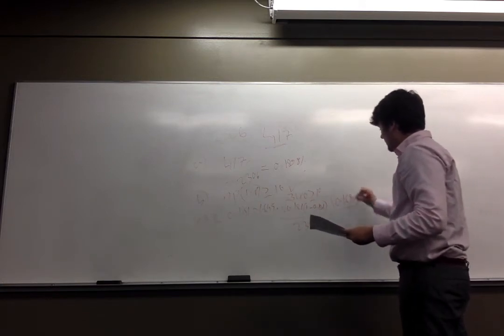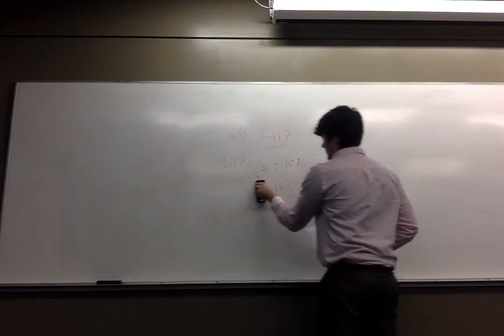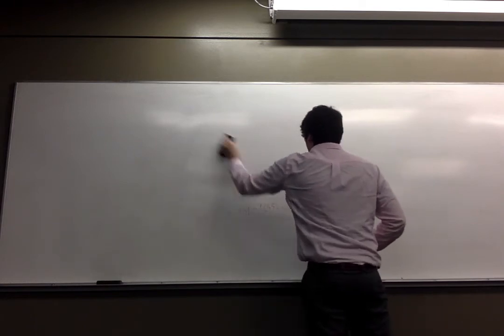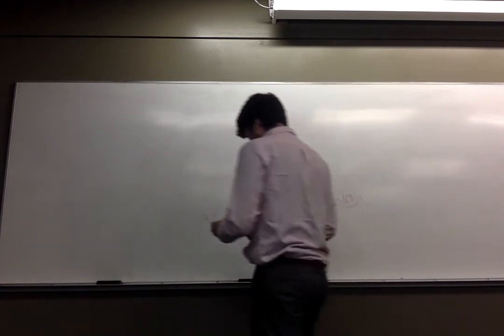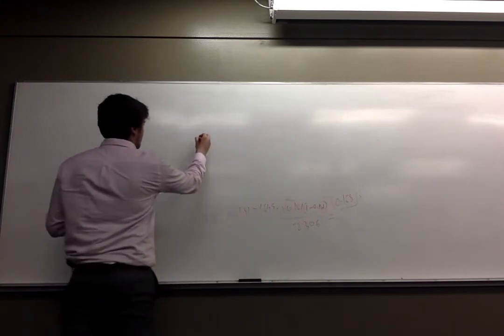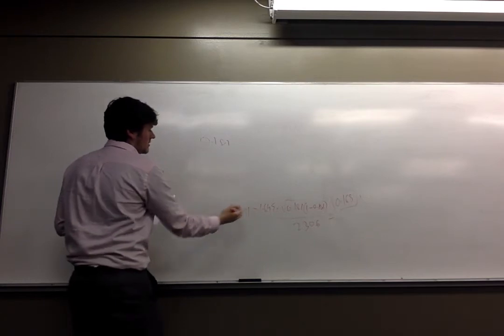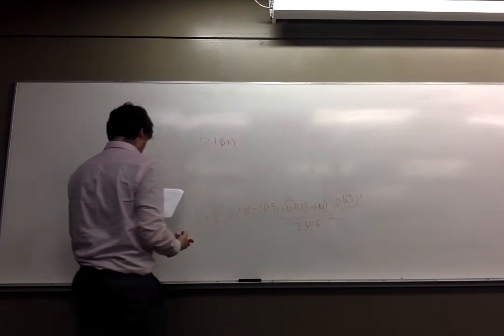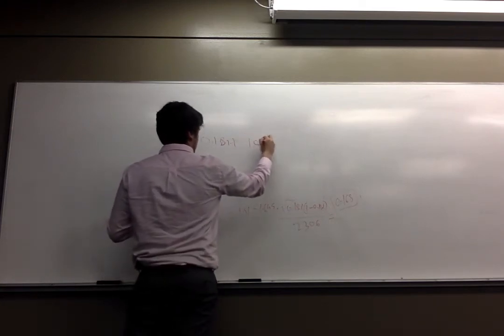And then to find the upper bound, it's pretty similar. For the upper bound, it's pretty much the same. You do 0.181, but instead of doing a minus, you do a plus, because it's the upper bound, plus 1.645.